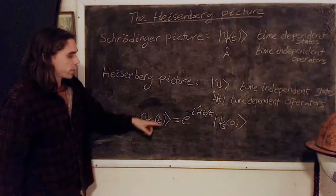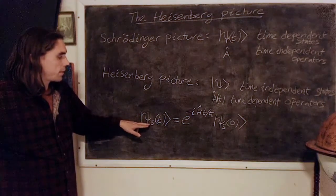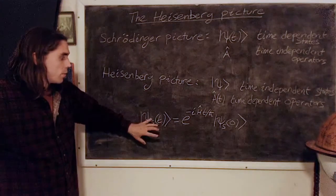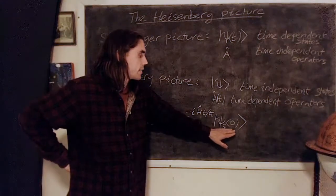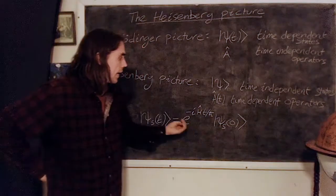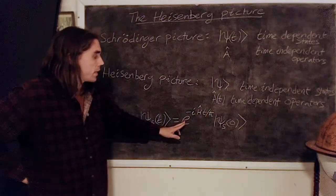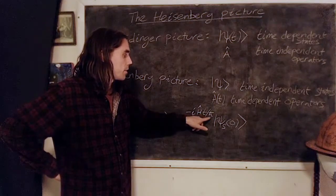Within the Schrödinger picture we have time dependent states, so let's label them |ψ_S(t)⟩ for Schrödinger as a function of time. We know that ψ_S(t) is nothing other than ψ_S at time equals zero acted on by this unitary operator e^(-iHt/ℏ).